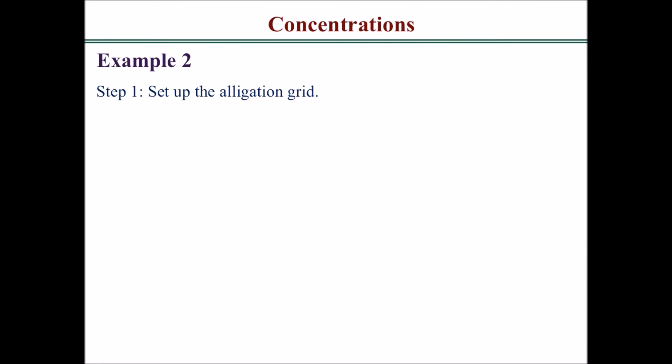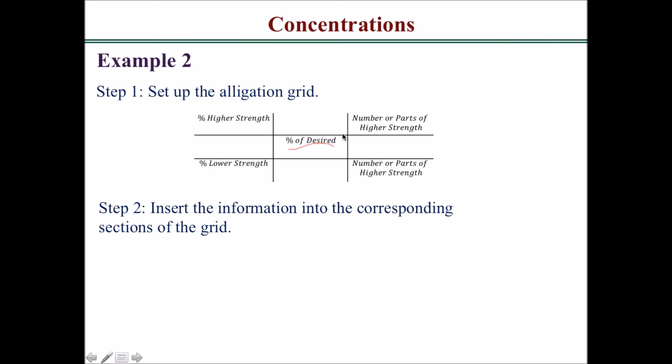Step one, you want to set up the alligation grid. For concentrations you can solve it using this method. This is the grid: you want to place the higher percent strength on the top left, place the lower strength on the bottom left, and the percent of the desired would be right in the middle. Then you want to insert the information into the corresponding sections of the grid.